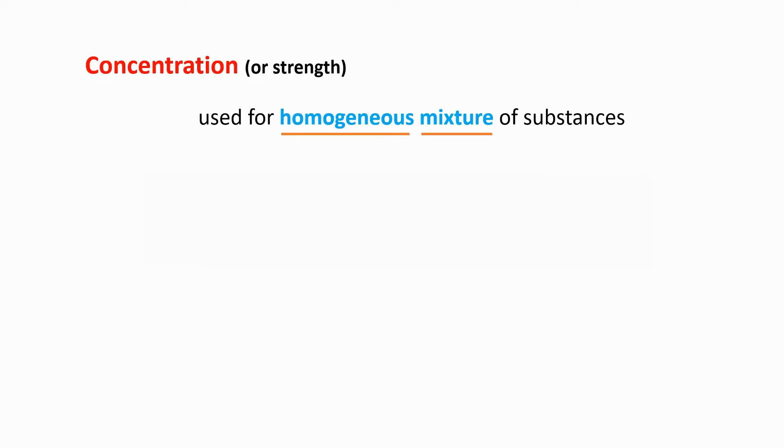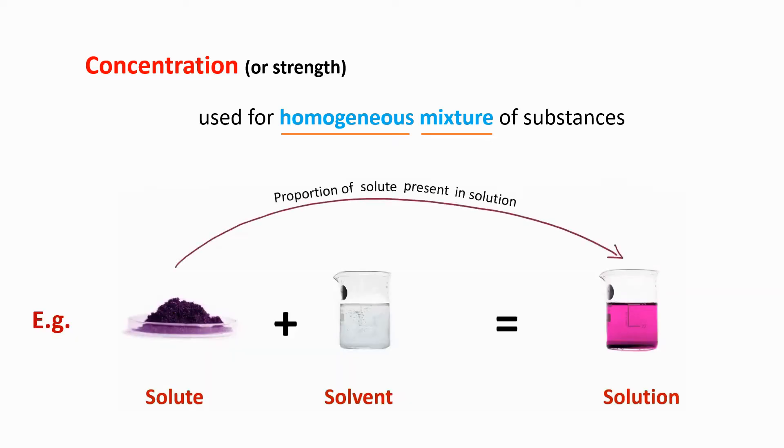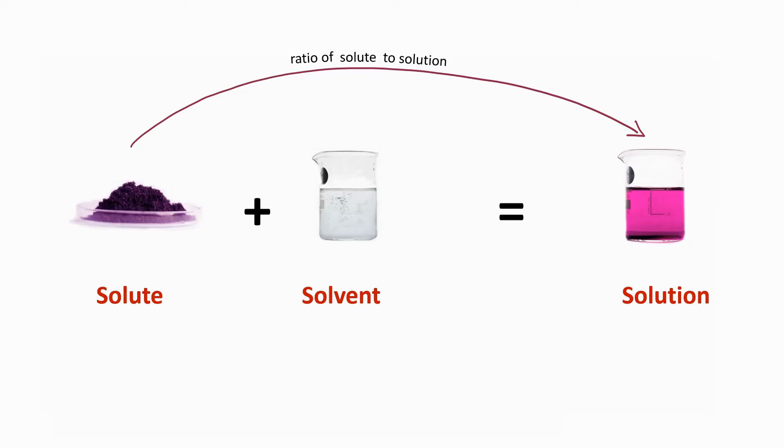The term concentration is used while using a homogeneous mixture of substances. Concentration or strength is the proportion of solute present in a solution. While calculating the concentration, you might have wondered why we consider the ratio of solute to the total volume of the solution and not the solvent. Let me clear that doubt before we proceed any further.